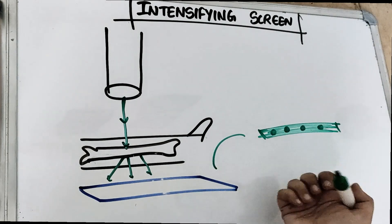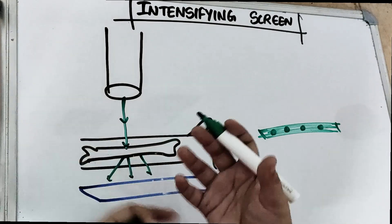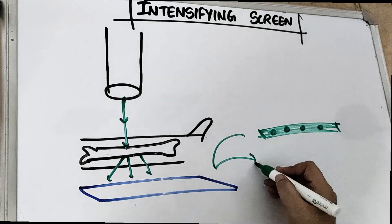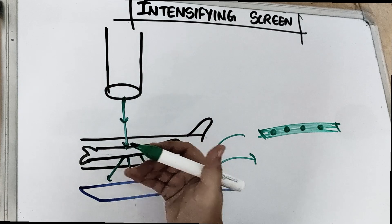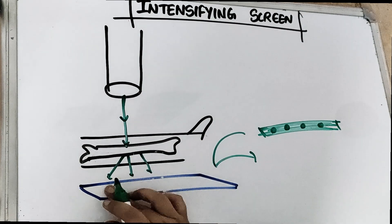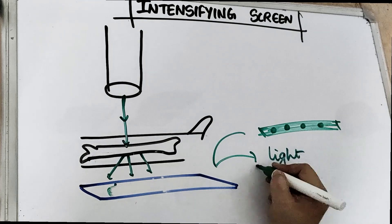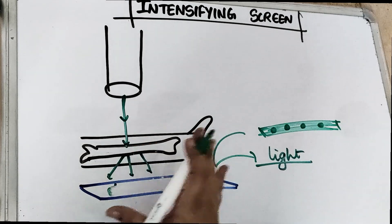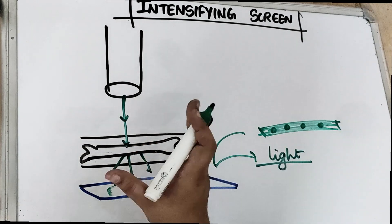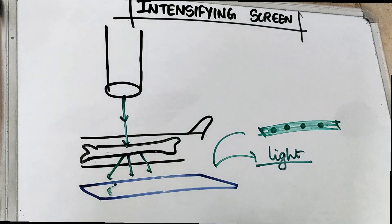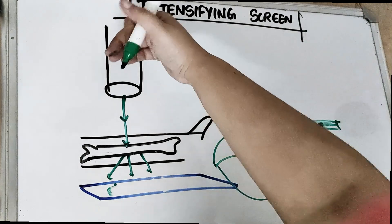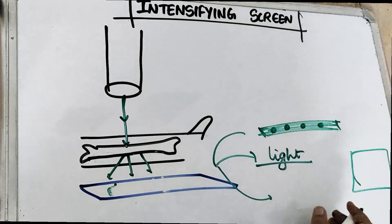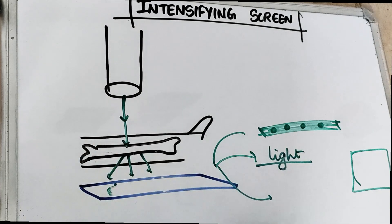Another way of image production is that if we convert the incoming x-ray into light rays, then we can use it like in photo fluorography or radiography. Or another way is that directly once the x-ray falls, we see it on the computer screen — this we call fluoroscopy. So these are some ways of image production.